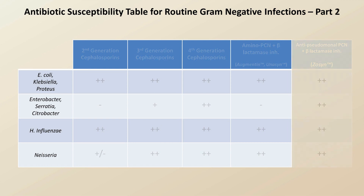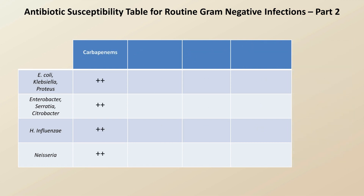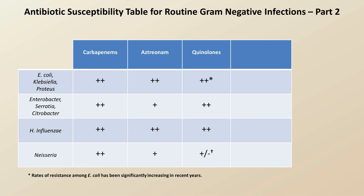Looking at a couple more of the antibiotic classes, carbapenems have great coverage of everything as well. Here is Aztreonam. And quinolones are interesting in that they have excellent activity against most things, with the exception of rising resistance, specifically in E. coli, that has been seen in the last five years or so in the United States. Also, resistance to quinolones among Neisseria is highly specific to geography, with some countries measuring a 10% resistance rate and others a 100% resistance rate.